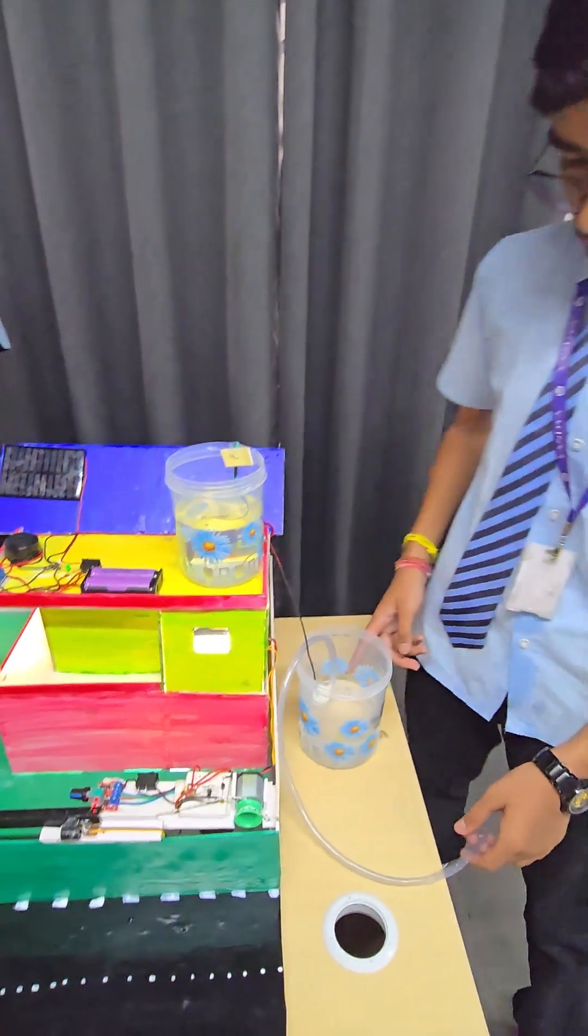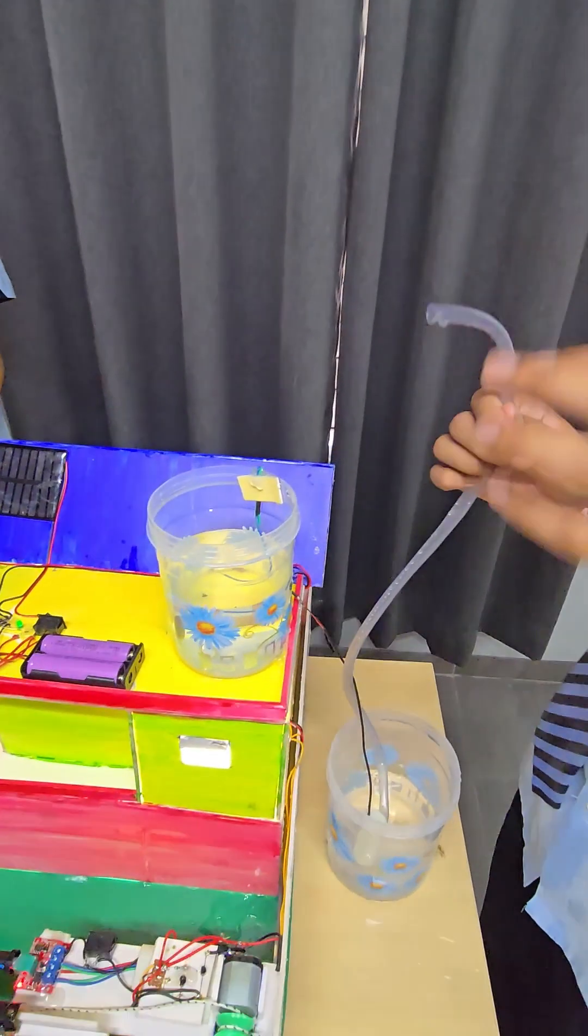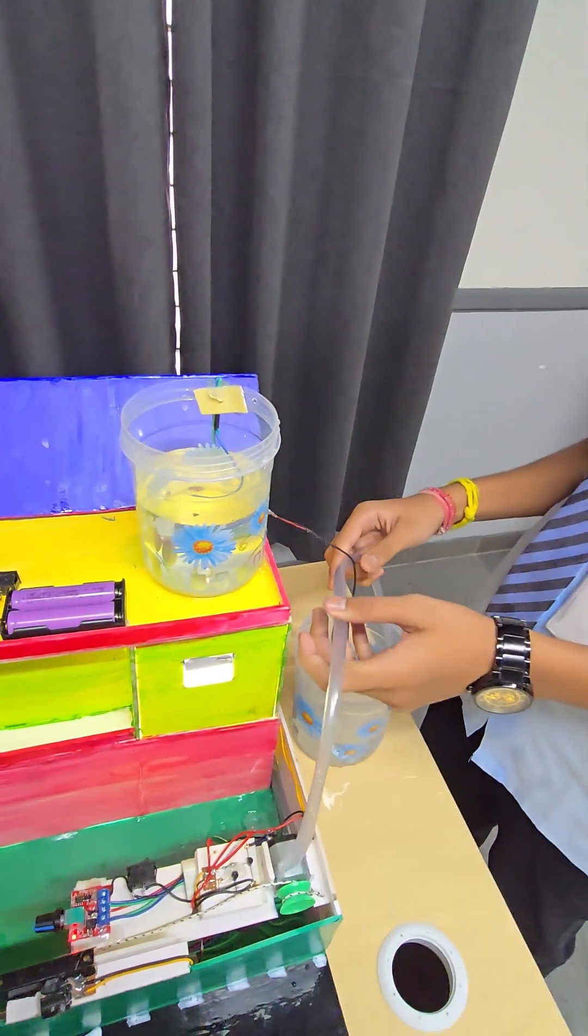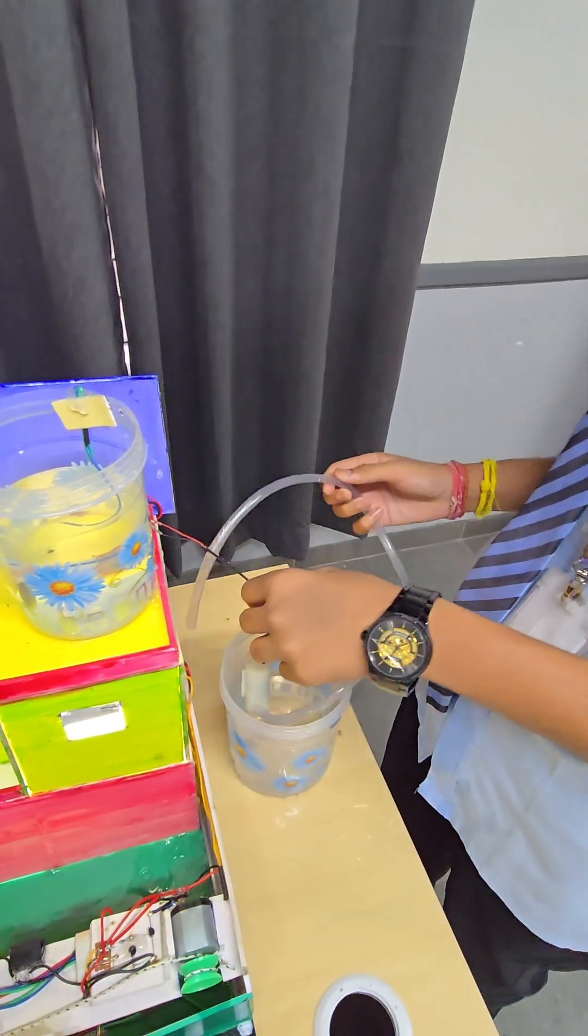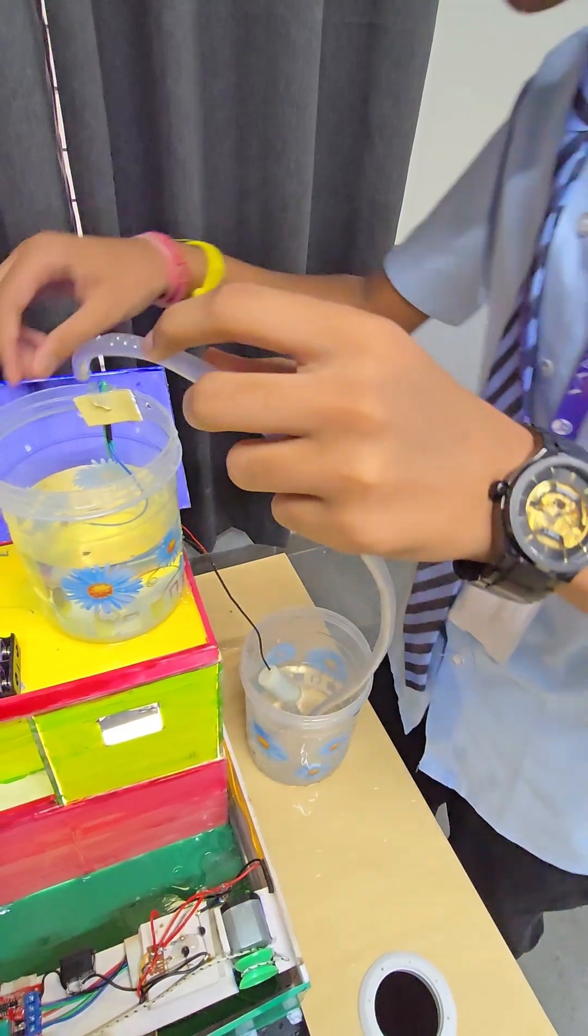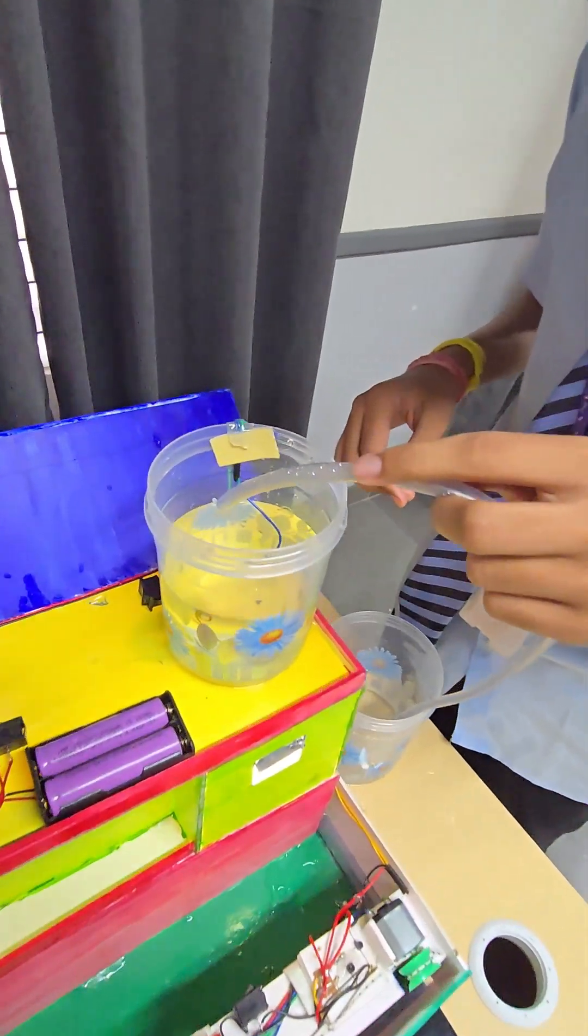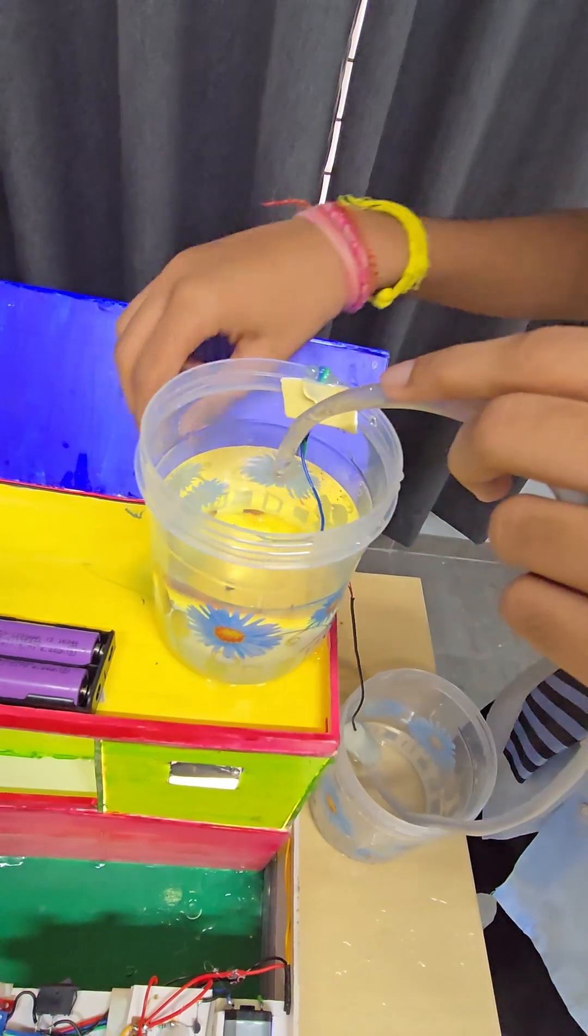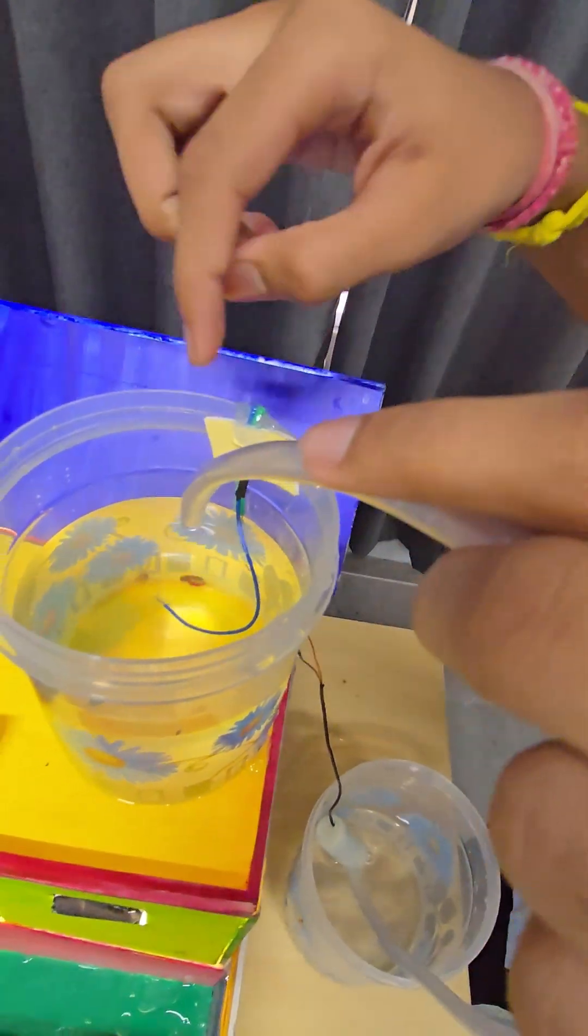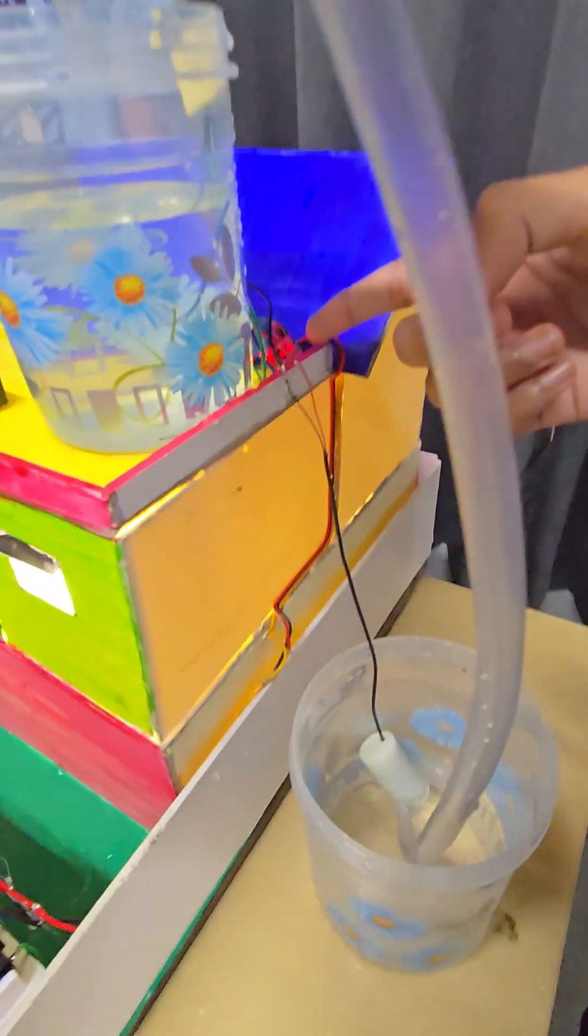We have made a water pump here which stops overflowing of water in the tank. When it touches the wire, this light will turn on.